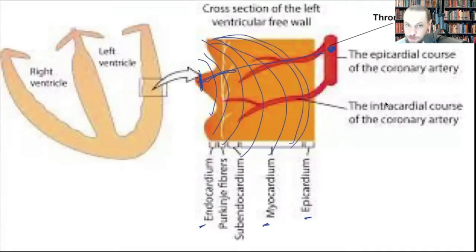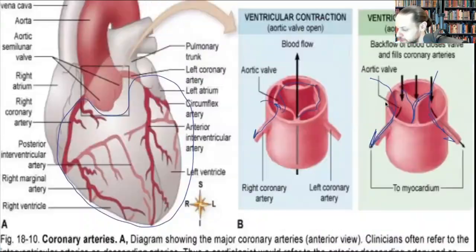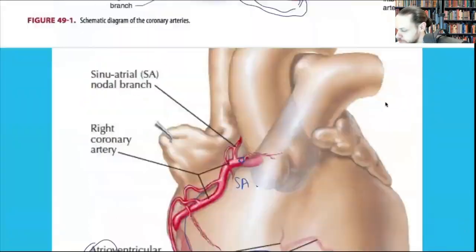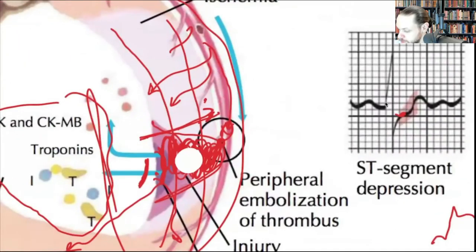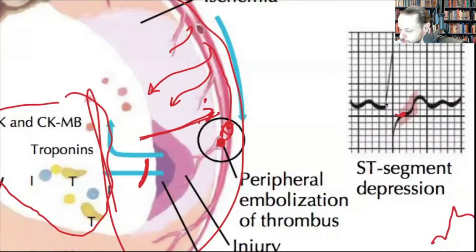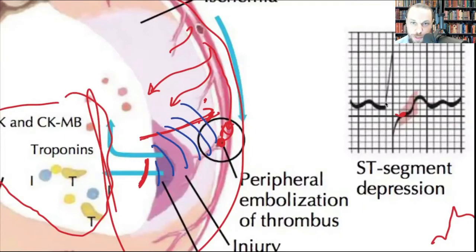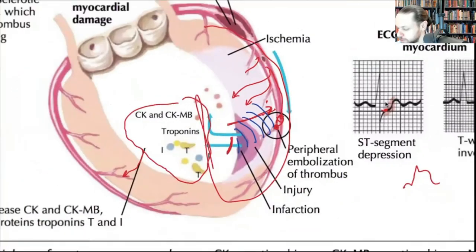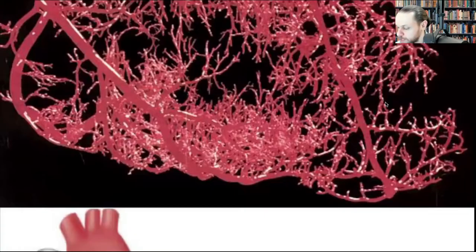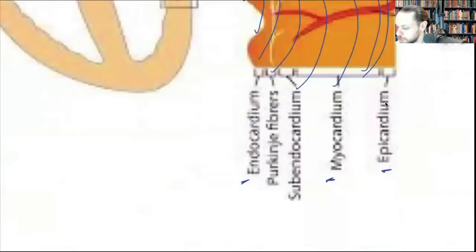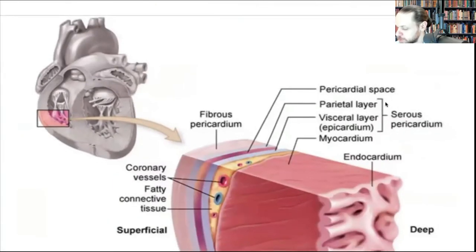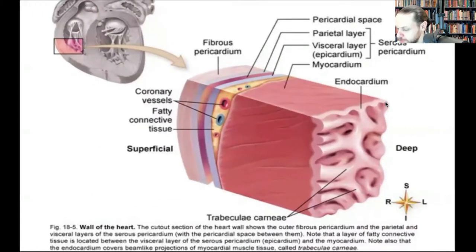You see the zone of necrosis — it expands the longer the patient waits to call 911 or get to the hospital. These are the vessels that penetrate through the wall. Now let's look at the EKGs and how changes develop.